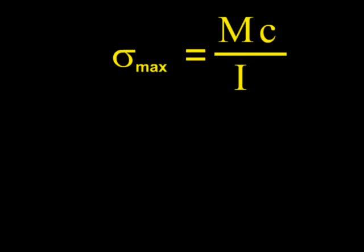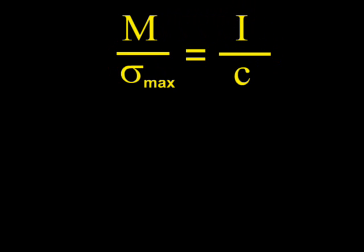In design, we often know the moment that a beam must carry and the maximum allowable stress for its material. Putting known quantities on the left of the equals sign gives M over sigma max equals I over C.